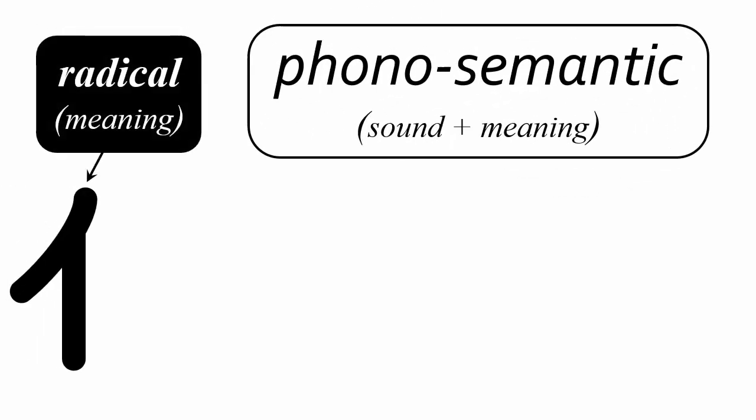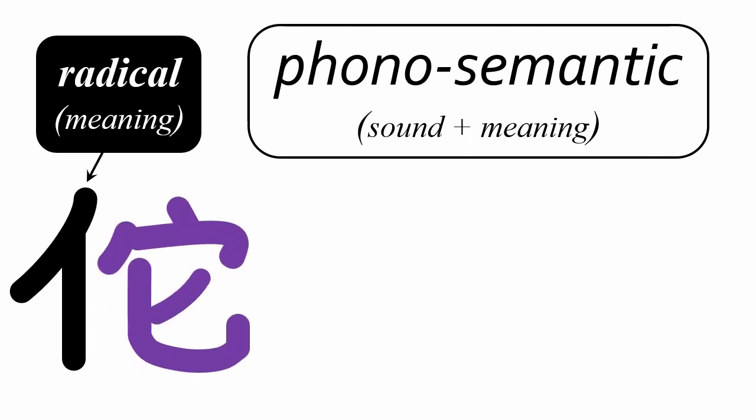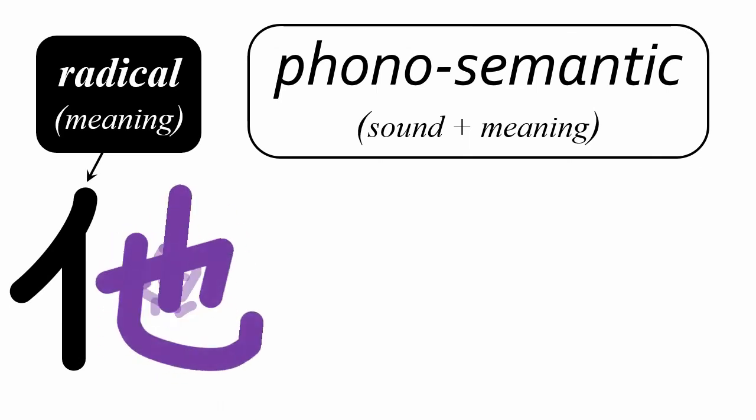Now we have another character, also pronounced first tone: tā. It's a combination of the person radical and our pictogram for snake. It's not some evil snake person — it's an extension from me to you to him or her. It's also a phono-semantic compound with first one version and then another for the snake phonetic element.